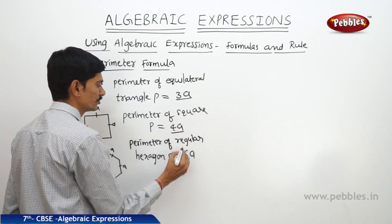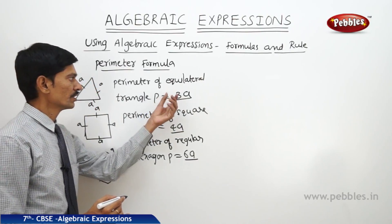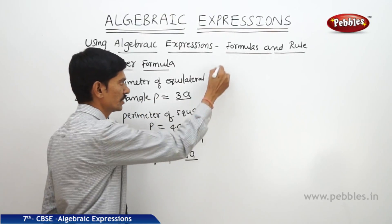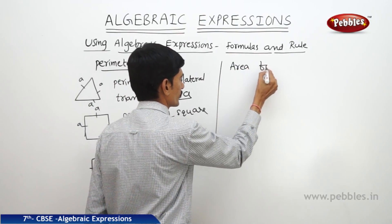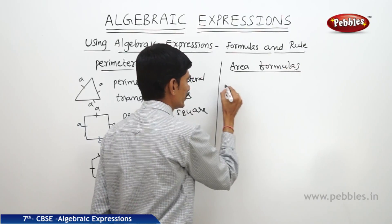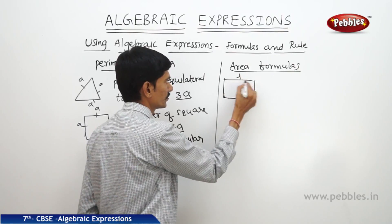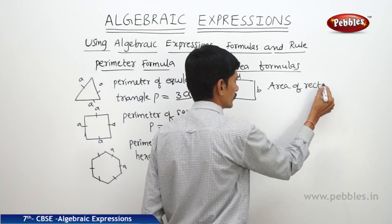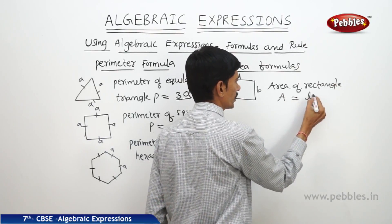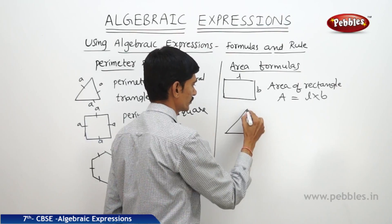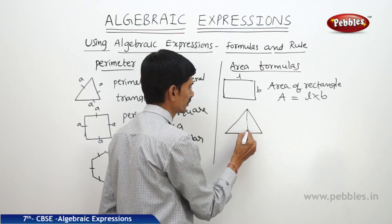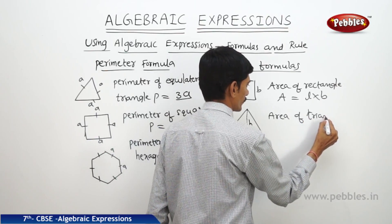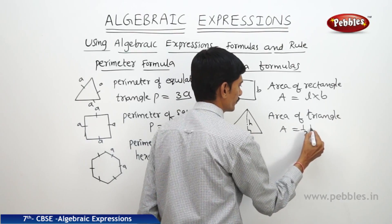So all these formulas are written using algebraic expressions. When we know the value of the side of the equilateral triangle, we can find its perimeter. Now let us see how to write the area formulas. If there is a rectangle whose length is L and breadth is B, then the area of the rectangle is L into B. If there is a triangle whose base is B units and height or altitude is H units, then the area of the triangle A equals half into base into height.